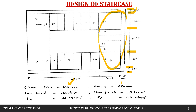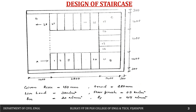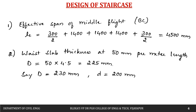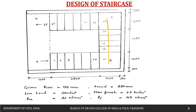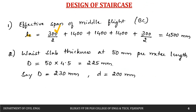Riser is 150 mm, tread is 280 mm, live load is 3 kN/m², floor finish is 0.5 kN/m², fck is 20, fy is 415. Now let us calculate the effective span of the middle flight. The effective span equals the center-to-center distance between supports: 300/2 + 1400 + 1400 + 1400 + 300/2, giving an effective span of 4.5 meters.